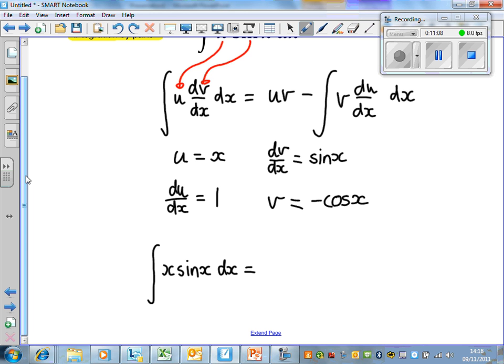So, uv, x multiplied by minus cos x, so minus x cos x. The answers ain't going to look pretty, but who cares? This is still, you still get the answer, basically.